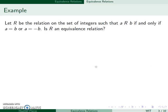For example, let's let R be the relation on the set of integers such that A is related to B if and only if A is equal to B, or A is equal to negative B. We want to know if this is an equivalence relation.